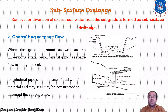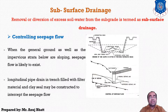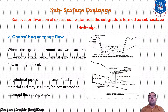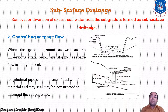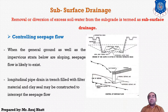The next method is controlling the seepage flow. When the general ground as well as the impervious strata below are sloping, seepage flow is likely to exist. If the seepage zone is at a depth less than 0.6 to 0.9 meters from the subgrade level, a longitudinal pipe drain in a trench filled with filter material and clay seal may be constructed to intercept the seepage flow. The figure shows the method by which the seepage line can be lowered to the desired depth.